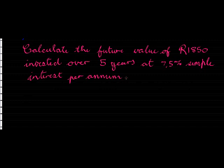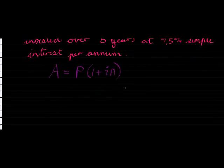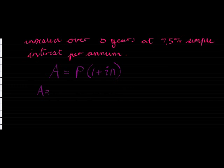Let's look at an example. Calculate the future value of a thousand eight hundred and fifty rand invested over five years at seven comma five percent simple interest per annum. So we'll use our formula we just calculated, that the future value, or the amortized value, is the principal value multiplied by one plus my interest rate multiplied by my time period.